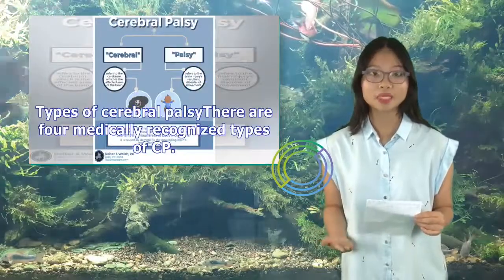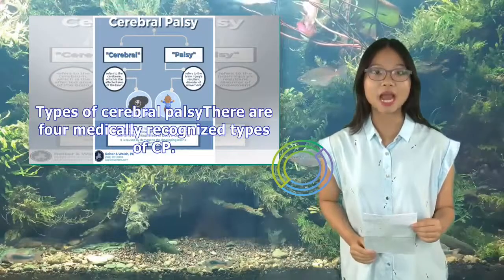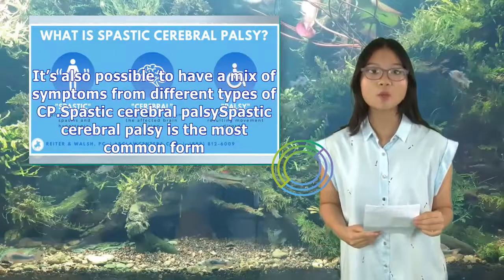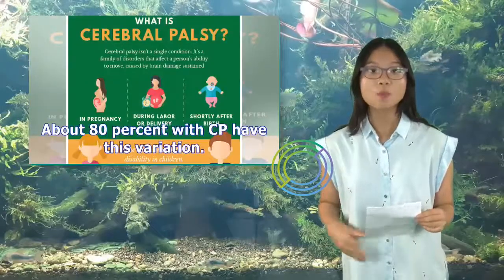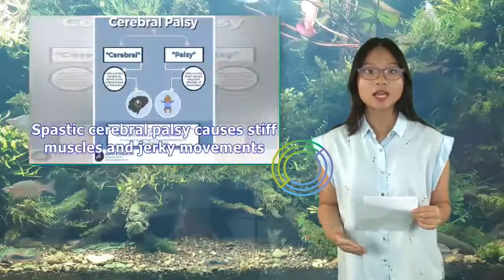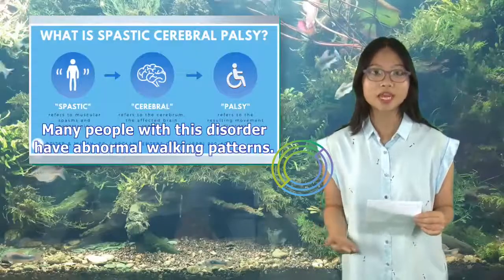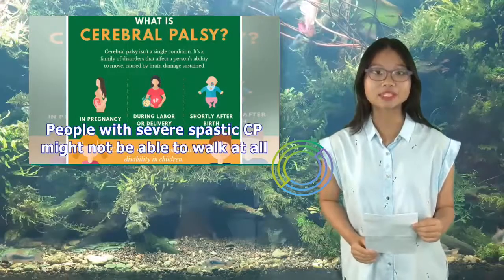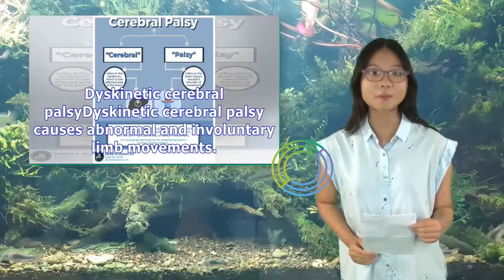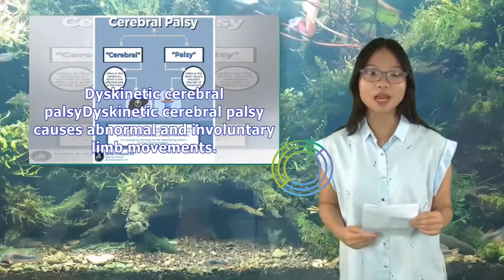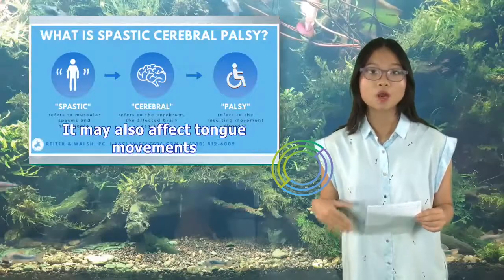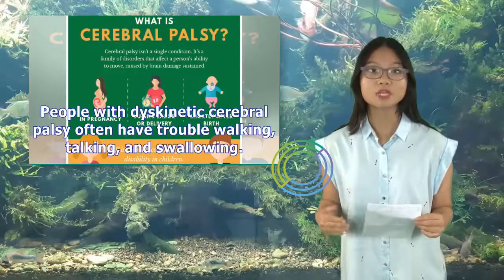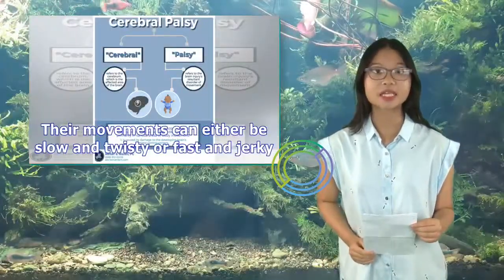There are four medically recognized types of CP, and it's also possible to have a mix of symptoms from different types. Spastic cerebral palsy is the most common form — about 80% of people with CP have this variation. It causes stiff muscles and jerky movements, and many people have abnormal walking patterns; those with severe spastic CP might not be able to walk at all. Dyskinetic cerebral palsy causes abnormal and involuntary limb movements, and may also affect tongue movements, making walking, talking, and swallowing difficult. Movements can be slow and twisty or fast and jerky.